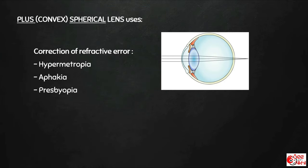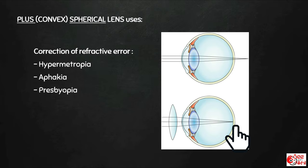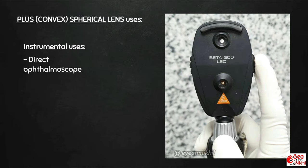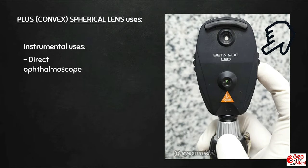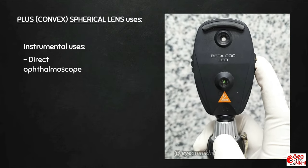Plus spherical lenses are used for correction of refractive errors like hypermetropia, aphakia, and presbyopia, in which the rays of light are focused behind the retina. A plus sphere helps focus these rays over the retina. It is also used in various low vision aids. A direct ophthalmoscope has both plus and minus spherical lenses, and a wheel is used to select the lens of choice and adjust focus.